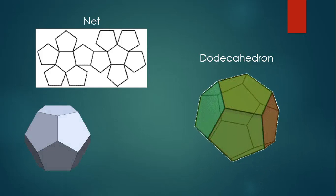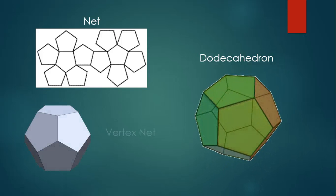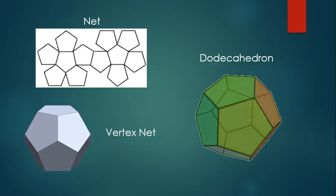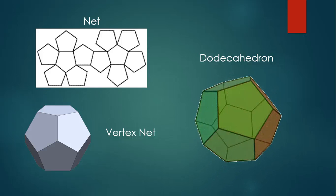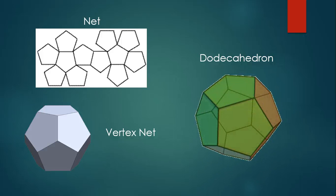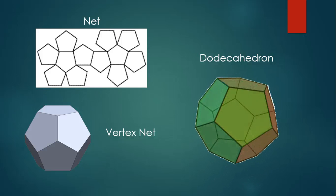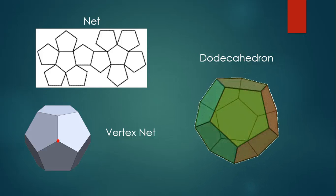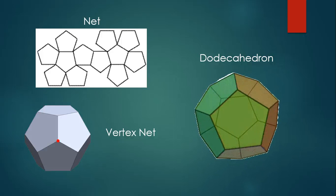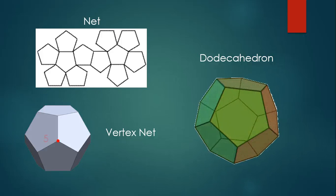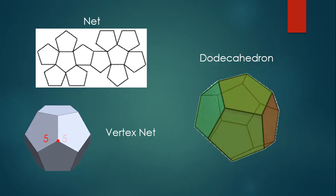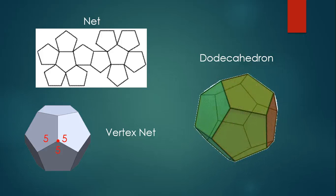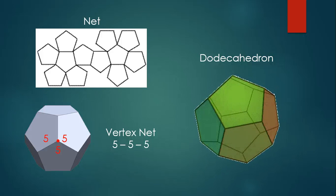We could also talk about a vertex net for the dodecahedron. The notion of a vertex net is exactly the same as for two-dimensional patterns. We think about any vertex on the three-dimensional shape and look at the faces that surround that vertex. In this case, we have a pentagon with five sides, another pentagon with five sides, and a third pentagon with five sides, so the vertex net for this dodecahedron could be described as 5-5-5.